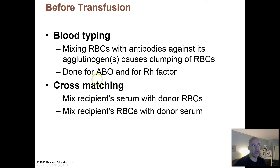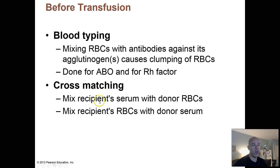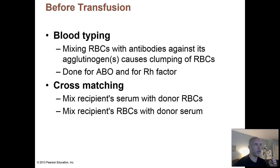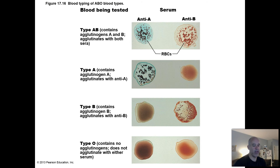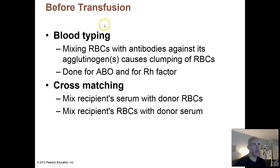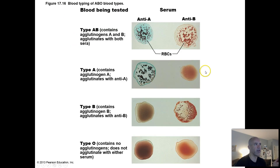Another way this can be done is called cross matching. So if you know you've got a recipient's blood and donor blood, or if you just have the recipient's serum — that's the liquid portion of the blood with clotting factors removed — you can mix that with the donor's red blood cells, or vice versa, and see whether or not you have a reaction that tells you whether the donor's red blood cells would be suitable for donation.